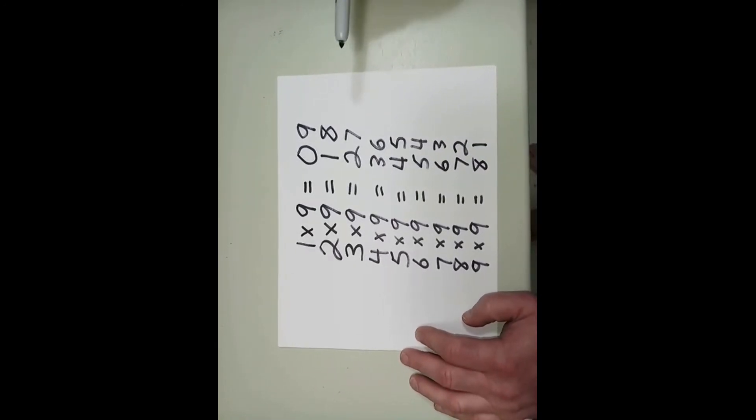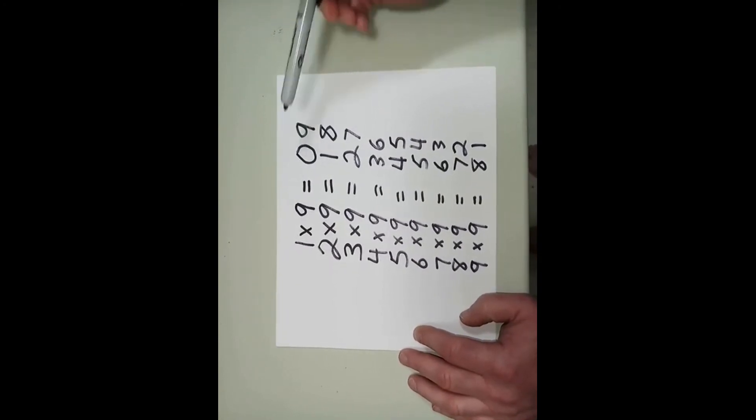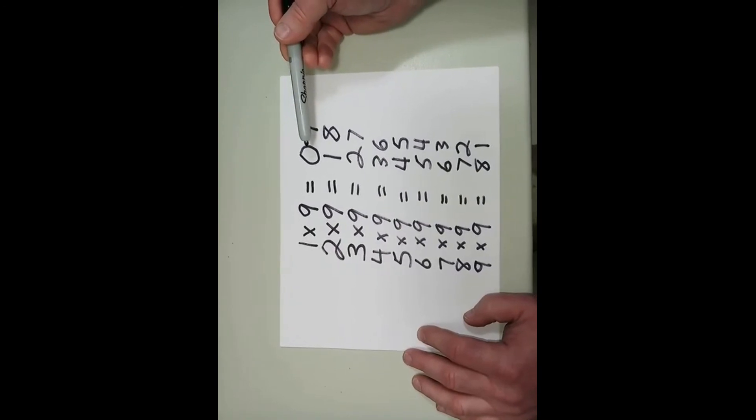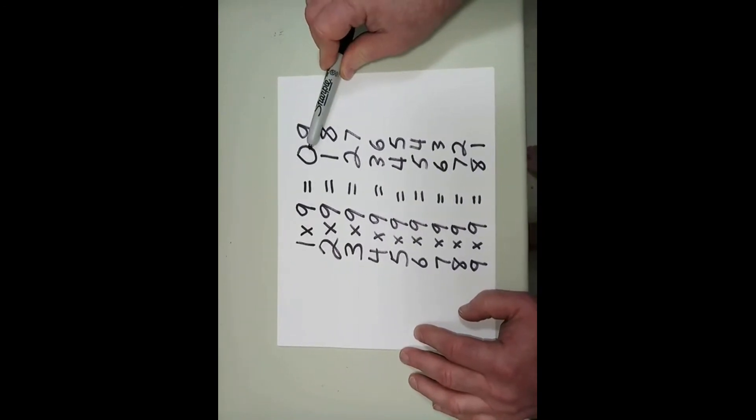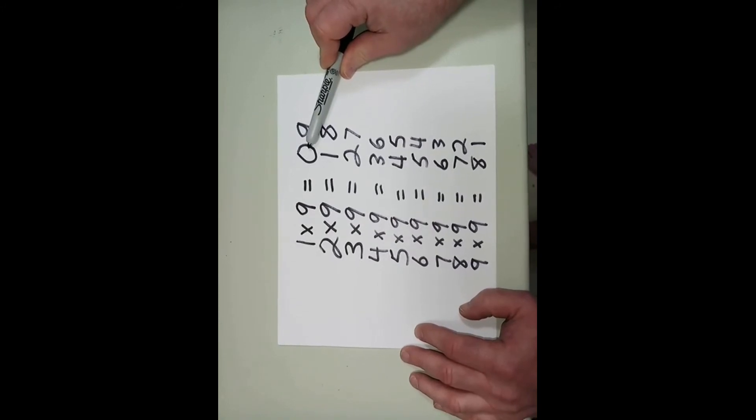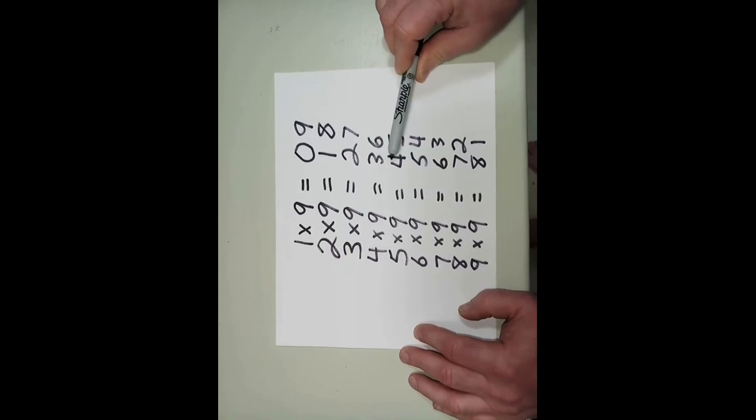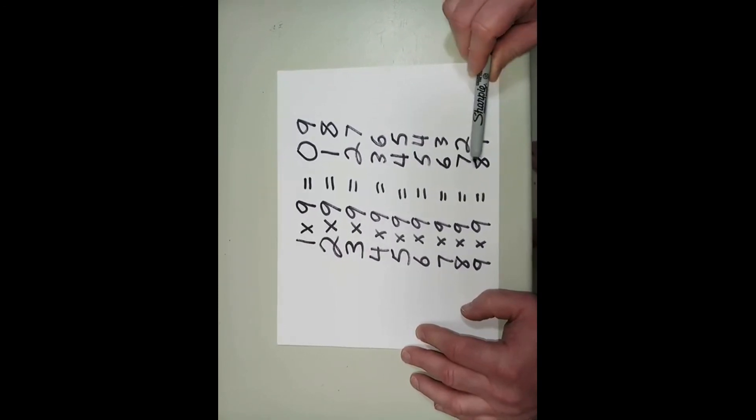Now let's look at the interesting pattern that develops in the answers. If we look at the tens place to begin with, in our first answer there was nothing so we have a zero. And then as we look at each answer watch what happens. Zero, one, two, three, four, five, six, seven, eight.